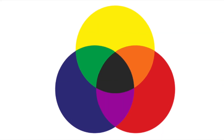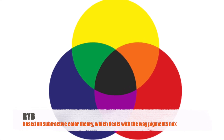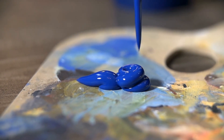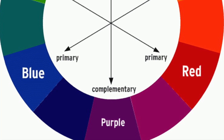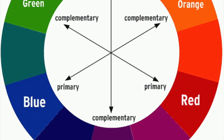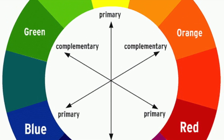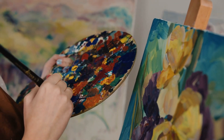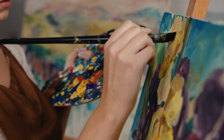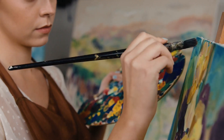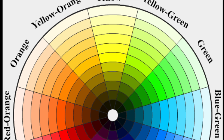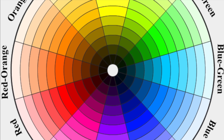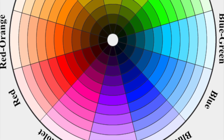Now let's talk about RYB. This color model is based on subtractive color theory, which deals with the way pigments mix. When you mix paints, dyes, or inks, you're working with subtractive colors, meaning that pigments absorb certain wavelengths of light and reflect others. For example, a red pigment absorbs most wavelengths except for red, which it reflects. When you mix red and yellow paint, the resulting color is orange because the combination absorbs more wavelengths and reflects the ones that correspond to orange. The RYB model has been around for centuries, long before the science of light was fully understood. Artists and early color theorists developed it based on empirical observations of how pigments mixed, choosing red, yellow, and blue as primaries because they could be combined to produce a wide range of other colors.